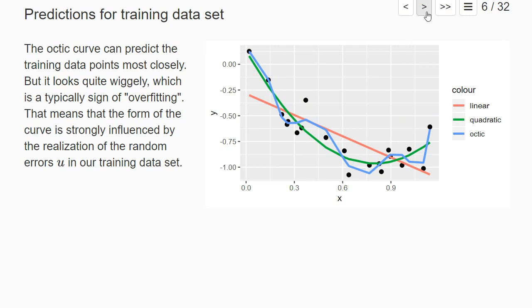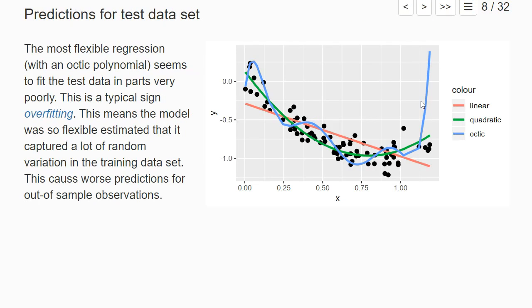and then on the test data set the prediction performance is very bad. Here it looks, roughly by eyesight, as if the quadratic specification performs best also on the test data set.